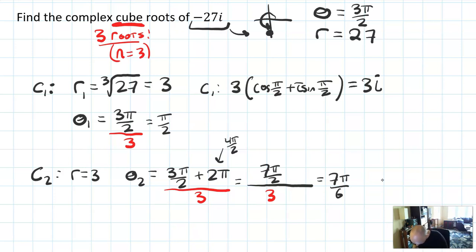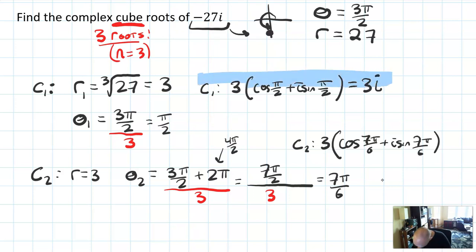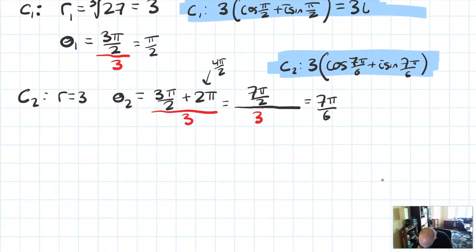So complex root number 2 is going to be 3 cosine 7π over 6 plus i sine 7π over 6. So I'm going to highlight my results here. There's the first result, here's the second result. And let's go ahead and find the third complex root.